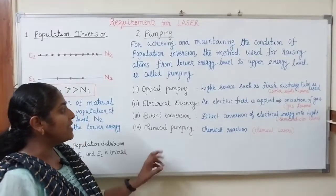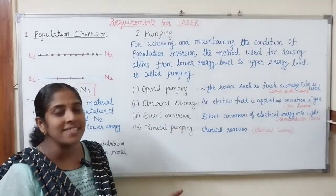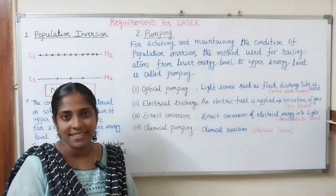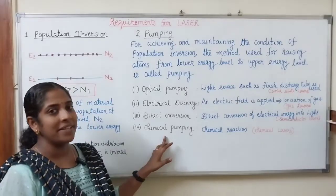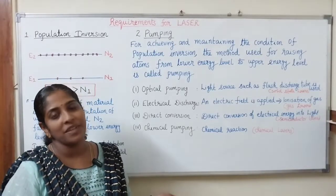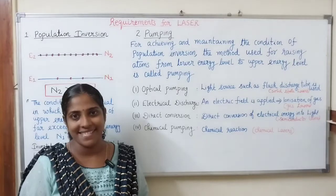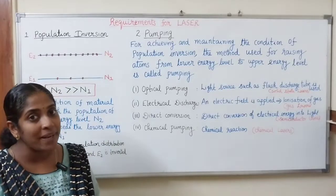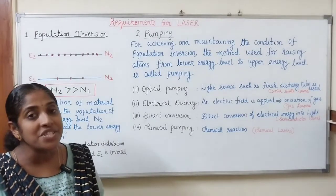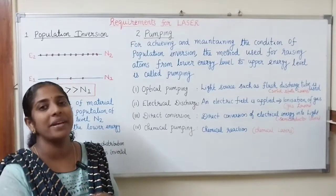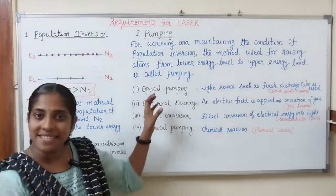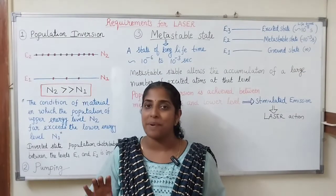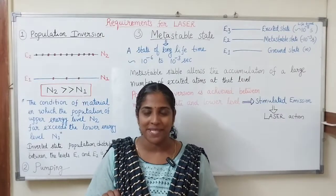In the third method — direct conversion — electrical energy is directly converted into light energy, usually in semiconductor lasers. In chemical pumping, some chemical reaction is used, which we employ in chemical lasers. So, for the laser action to take place, population inversion is required. That population inversion is achieved and maintained by the process of pumping using these various techniques. So, population inversion and pumping are the two requirements for the laser action to take place.